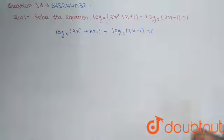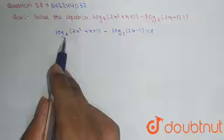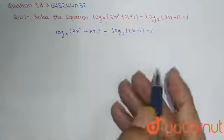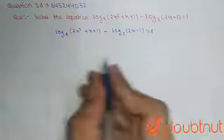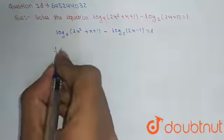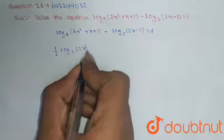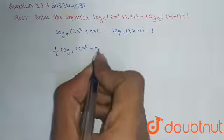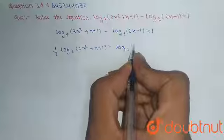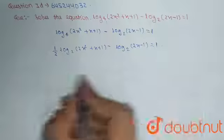Now, what we have to do is first make the base of both log functions common. So this will be equals to (1/2) log base 2 of (2x² + x + 1) minus log base 2 of (2x - 1), equals 1.